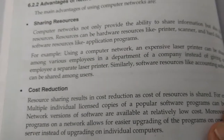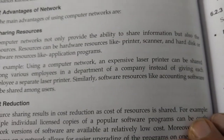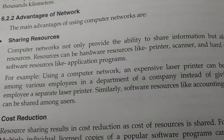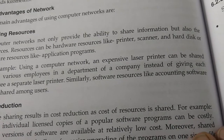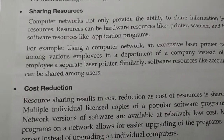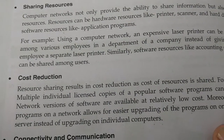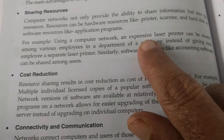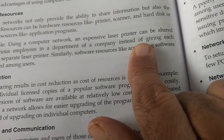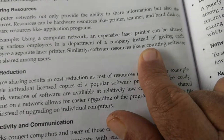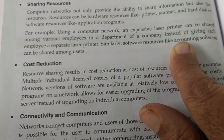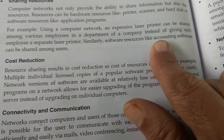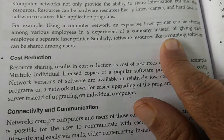Computer networks not only provide the ability to share information but also other resources. Resources can be hardware resources like printers, scanners, and hard disks, or software resources like application programs. For example, using a computer network, an expensive laser printer can be shared among various employees in a department, instead of giving each employee a separate laser printer.